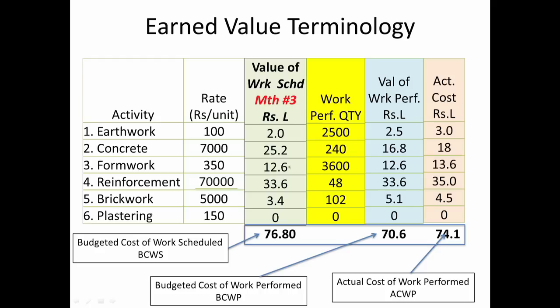For formwork and reinforcement, both are on what was originally planned — 12.6 and 33.6 as planned. Brickwork is also ahead. So while brickwork and earthwork are ahead, and formwork and reinforcement are on plan, we are really behind on concreting. This allows us to pinpoint that the concreting package is what is causing the project to fall behind schedule.